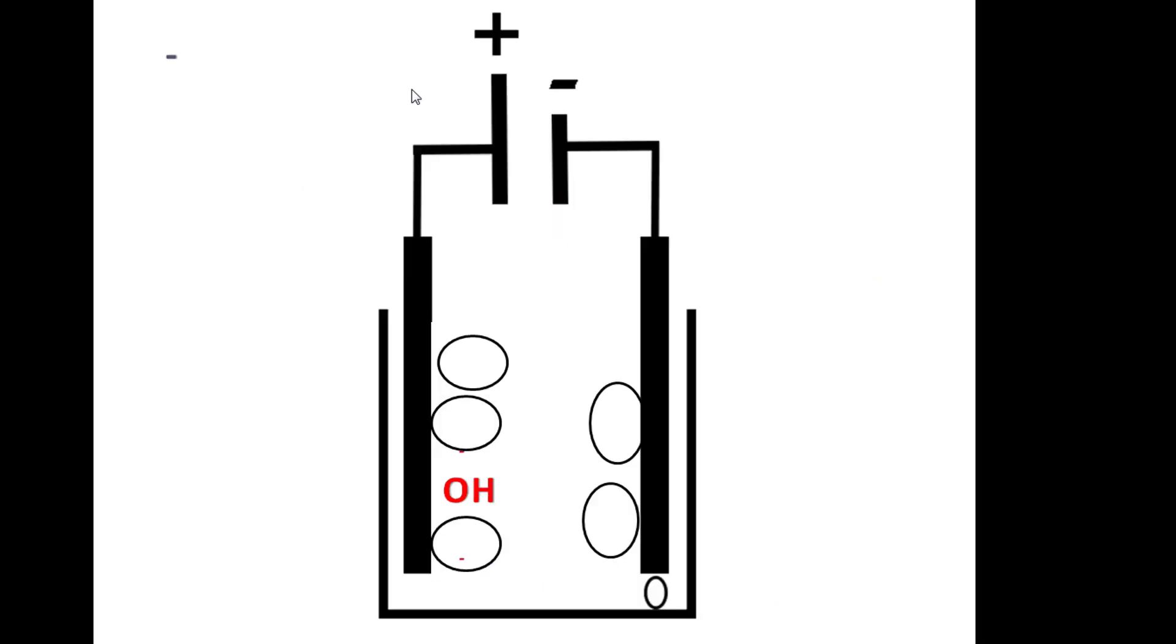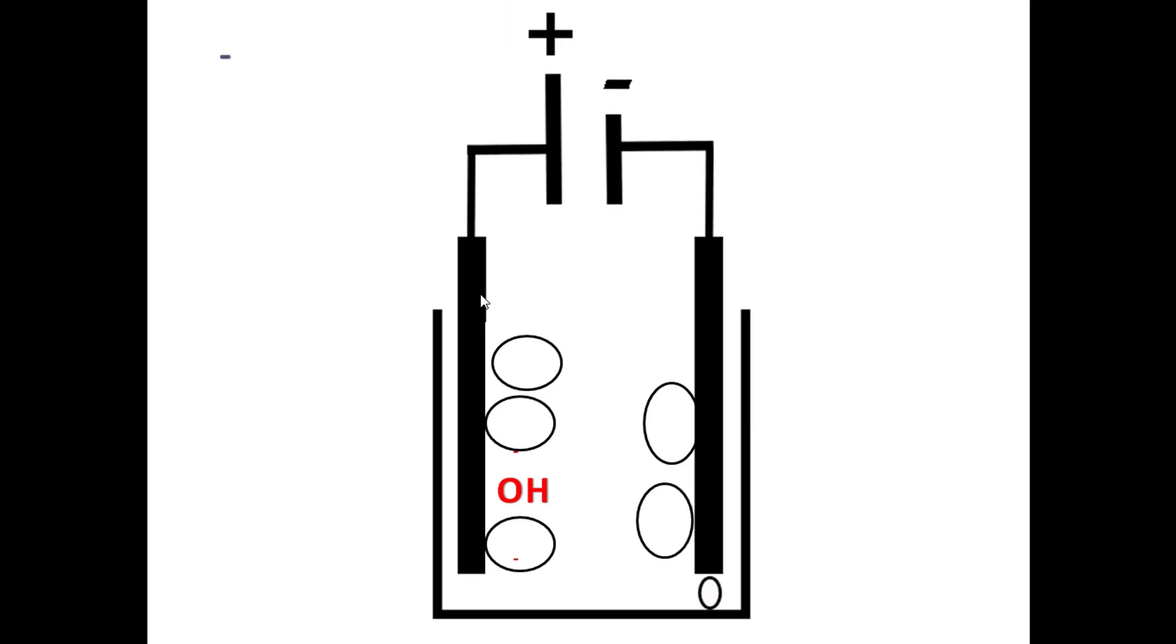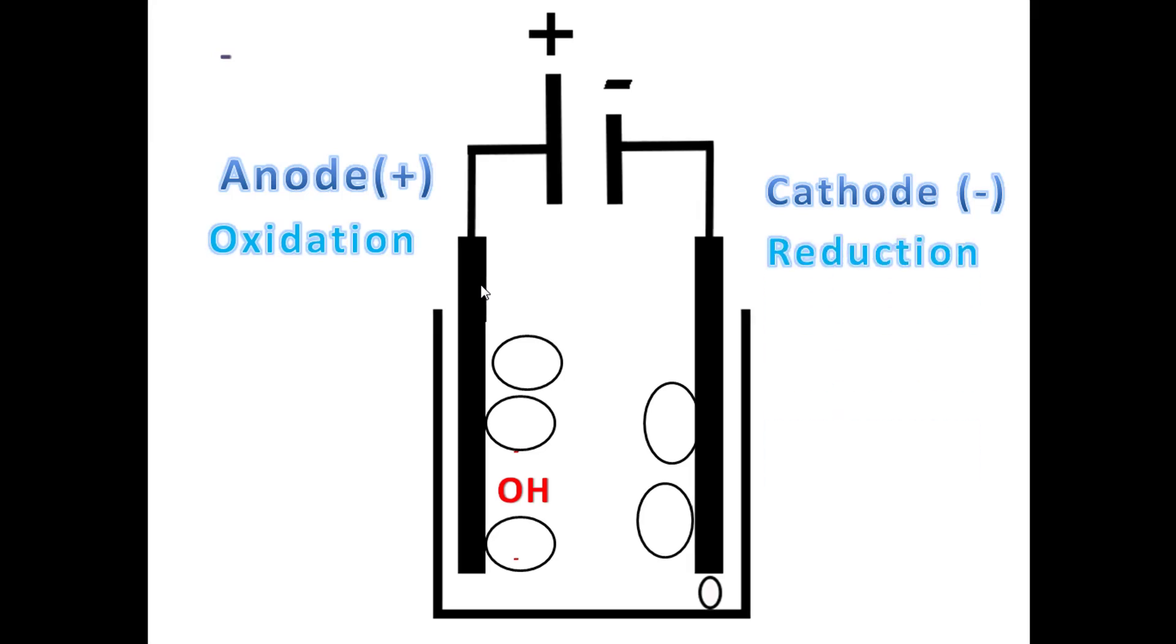Let's introduce you to the electrolysis cell. The main parts are the electrolyte or the place of ions, electrodes which are the conductors of electricity, and the source of voltage which is the battery. We call the positive terminal anode, which is positively charged, and the cathode is negatively charged. The process at the anode is oxidation and the process at the cathode is reduction.